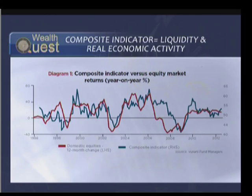Let's just show a visual of what that actually looks like. Have a look at the following graph and you can see the composite indicator — that's what Tony and them have built at Vinani, shown in blue — relative to domestic equities, and that's the 12-month change. You can see how the two actually track each other over time and how correlated they are. That becomes a precursor for understanding asset allocation and understanding where the cycle is potentially going.